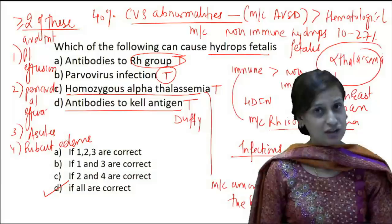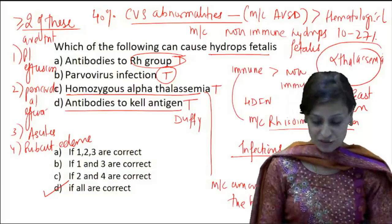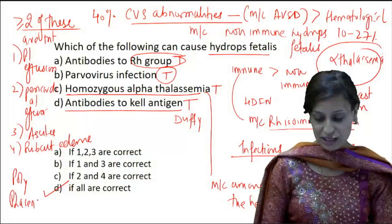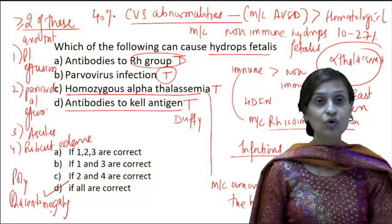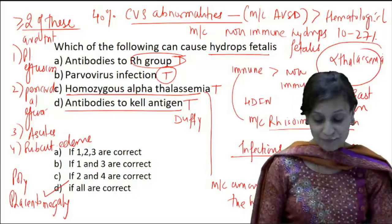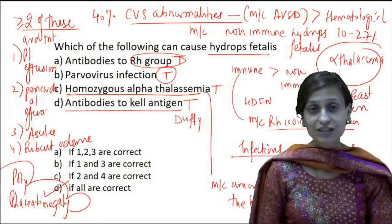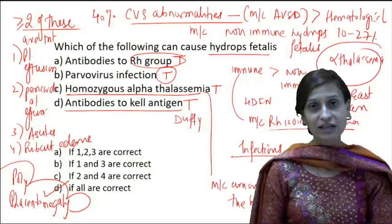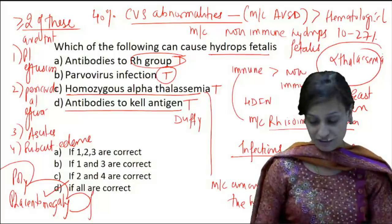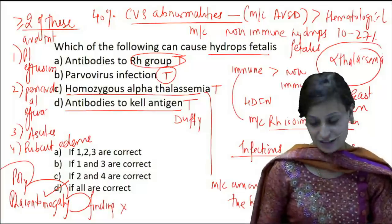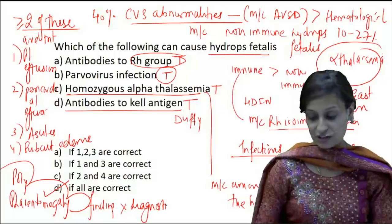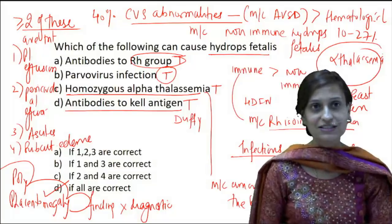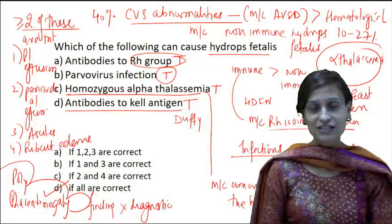If fluid collection is present in two or more of these cavities, it is diagnosed as hydrops fetalis. Babies with hydrops may also show polyhydramnios and placentomegaly on ultrasound — but these are not diagnostic criteria; they are only associated findings in a pregnancy complicated by hydrops fetalis.